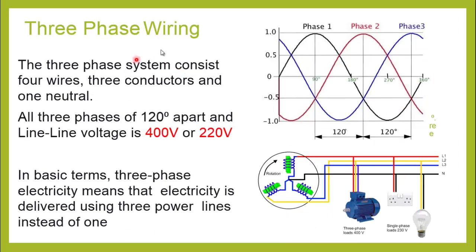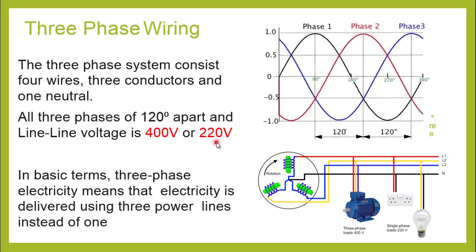In three-phase wiring we normally have four conductors. Three are the phase conductors, which are termed as L1, L2, and L3, or in other terminology indicated by R, Y, and B. All these phases are 120 degrees apart. The voltage between line to line — that is, between L1 and L2, L2 and L3, or L3 and L1 — is 400 volts, or in other regions 220 volts. When line-to-line voltage is 400 volts, the line-to-neutral voltage is 230 volts; when line-to-line is 220 volts, line-to-neutral is 110 volts, because line-to-line voltage is √3 times the line-to-neutral voltage.